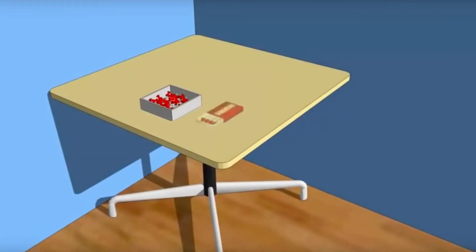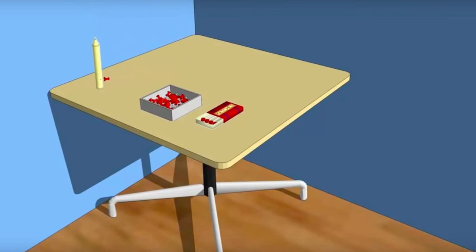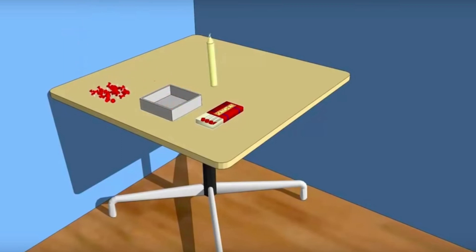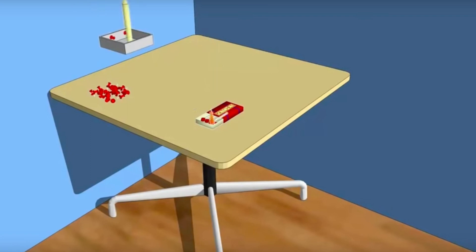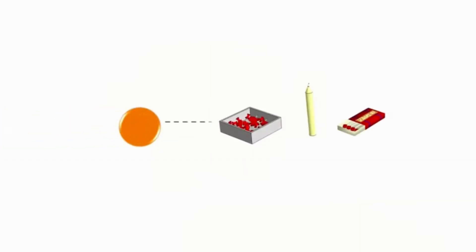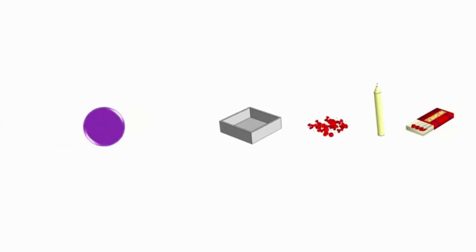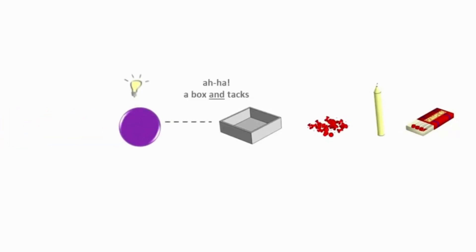To demonstrate this, a German psychologist in 1935 handed participants a box of thumbtacks, a candle, and matches, and asked them to attach a lit candle to a wall so the wax wouldn't drip. Some tried tacking the candle directly — wax dripped. Some tried melting the edges — still no solution. The answer: remove the tacks from the box, tack the box to the wall, and place the candle upright on it. This is functional fixedness — we assumed the box was only for storing thumbtacks.